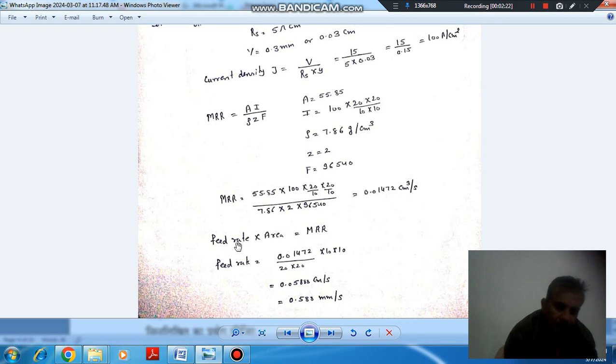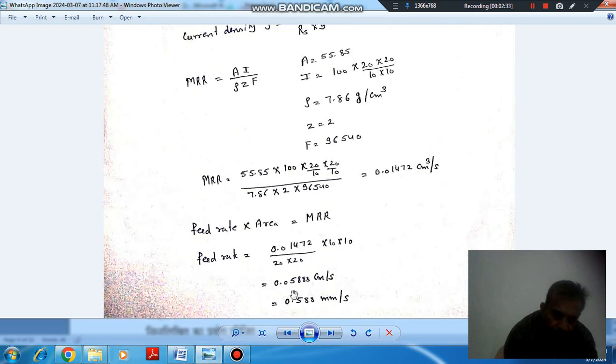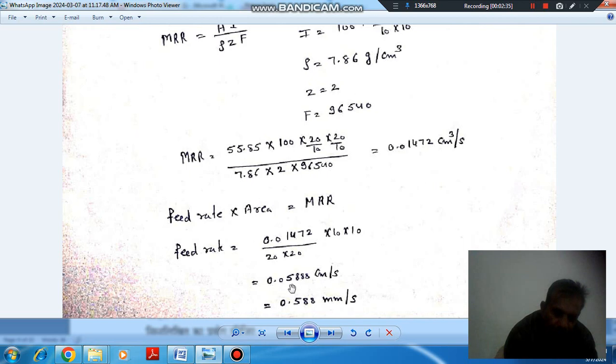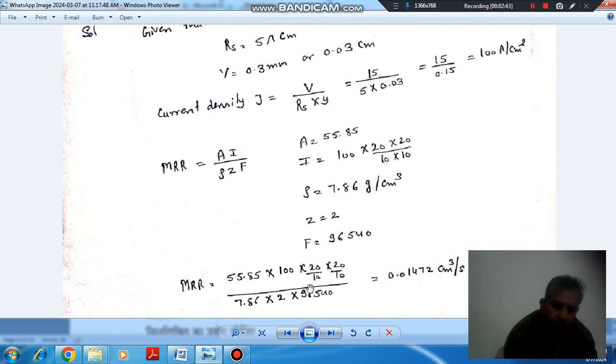Where n is the valency. So metal removal rate comes out to be approximately 0.583 mm per second. This is an important result.